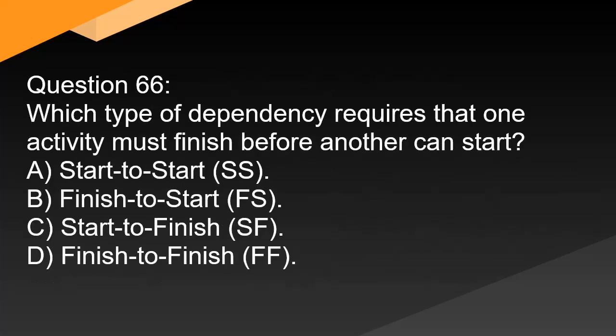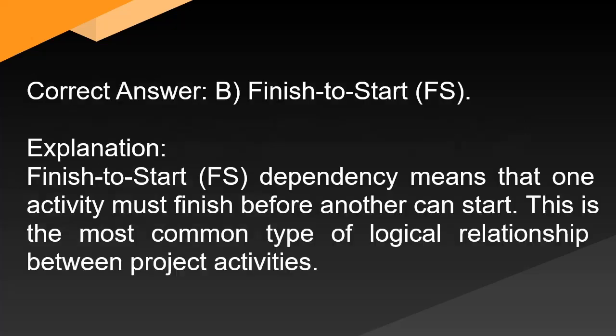Question 66: Which type of dependency requires that one activity must finish before another can start? A. Start to start (SS). B. Finish to start (FS). C. Start to finish (SF). D. Finish to finish (FF). Correct answer: B. Finish to start (FS). Explanation: Finish to start (FS) dependency means that one activity must finish before another can start. This is the most common type of logical relationship between project activities.